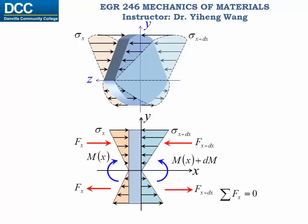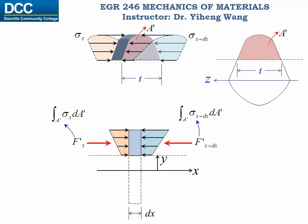However, what happens if we section this segment horizontally and only analyze the top segment? If we isolate this top segment, the remaining forces on the two sides of this segment no longer equal each other. Therefore, in order to achieve equilibrium, an extra force must develop at the bottom of this segment.